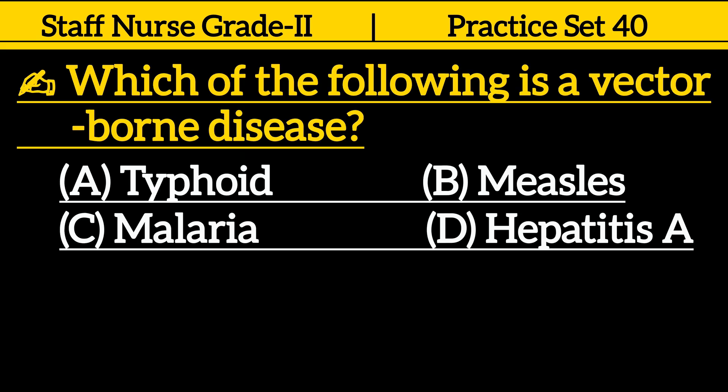Which of the following is a vector-borne disease? Option A. Typhoid. Option B. Measles. Option C. Malaria. Option D. Hepatitis A.